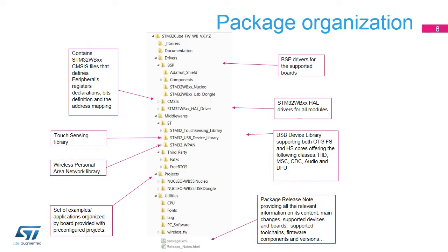All examples have the same structure. The /INC folder contains all header files. The /SRC folder contains the source code. The /E-WARM, /MDK ARM, and /SW4STM32 folders contain the pre-configured project for each toolchain. A README text file describes the example behavior and the environment needed to make it work. Rich documentation is associated with the STM32CubeWB firmware package. Some documents are generic to all STM32 series, and others are specific to the STM32WB series. The getting started with the STM32CubeWB firmware package user manual is the document that you need to read first when you start using the STM32Cube firmware package.